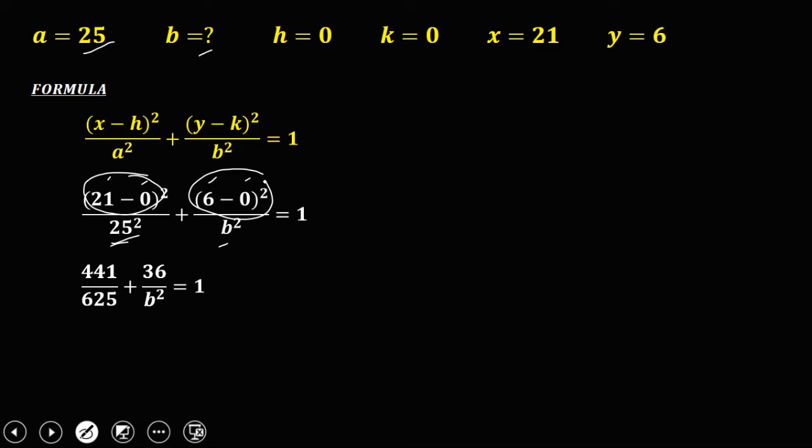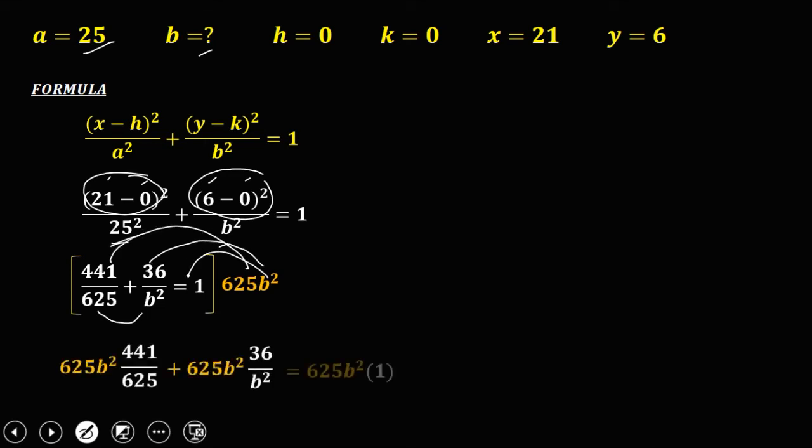Then to simplify, the equation contains a fraction, so just multiply the whole equation by the LCD. The LCD is the product of these two denominators, then distribute to every term. Then simplify, cancel 625, so we have 441b², this one cancels b², so that's 625 times 36, that's 22,500, then 625b² times 1, equals 625b².